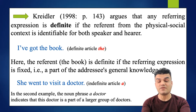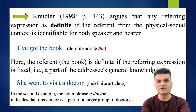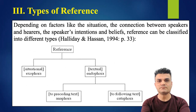For example, 'I've got the book.' The definite article 'the' is used - the referent 'the book' is definite if there is a kind of mutual understanding between speaker and hearer about which book is being referred to. In contrast, 'she went to visit a doctor' uses the indefinite article 'a' - the noun phrase 'a doctor' indicates this doctor is part of a larger group of doctors, so the audience doesn't know which doctor, and it is indefinite.